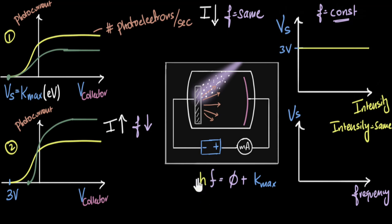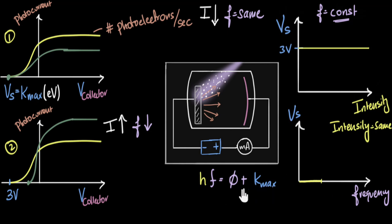If the frequency is zero, nothing happens. If the frequency is a little higher, again nothing happens. So if you start with very low frequency, you get no photoelectric effect, and the stopping voltage should also be zero — until you hit that minimum threshold frequency. After that, if you increase the frequency, the maximum kinetic energy increases, the stopping voltage increases, and so there'll be a linear relationship — it'll increase linearly. So it's a straight line starting at the threshold frequency.